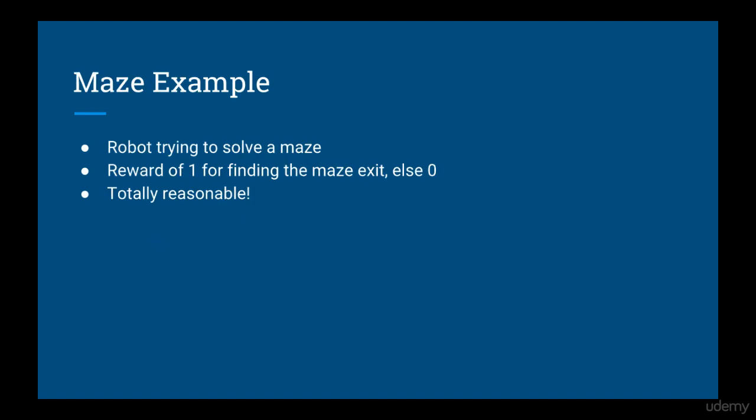One good example of how to define rewards is a maze. Imagine you're a robot and you've never seen this maze before, so you kind of just randomly move along trying to find your way out. The goal, which is to exit the maze, gives you a reward of 1; otherwise you get nothing.